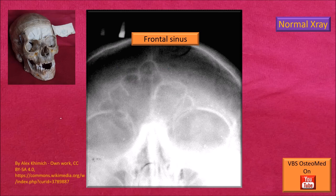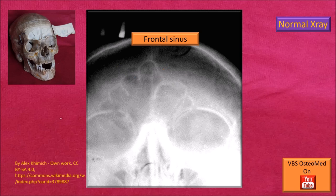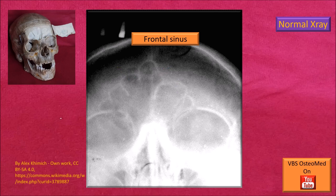Here is the same frontal sinus on a plain X-ray. You can see the crown-like appearance of the frontal sinus. Inferolaterally is the orbit, and right below that is the nasal cavity.